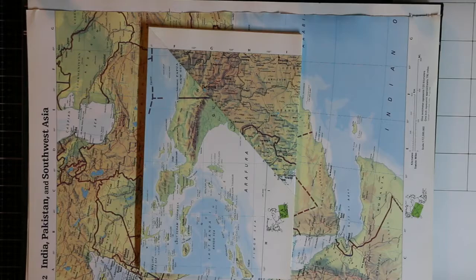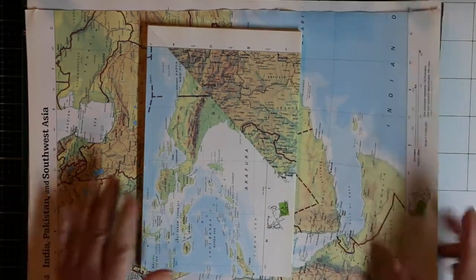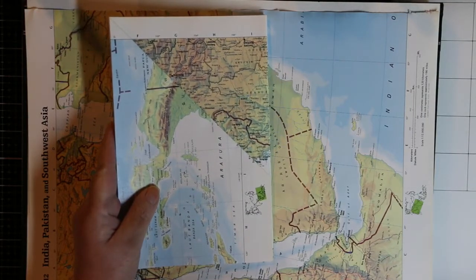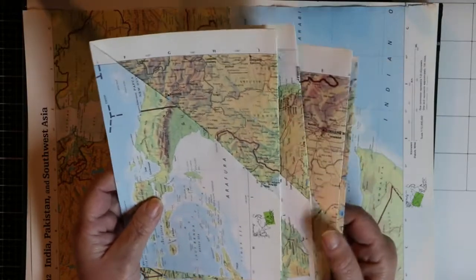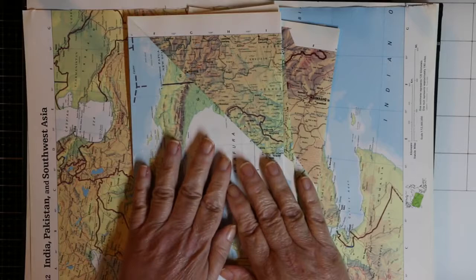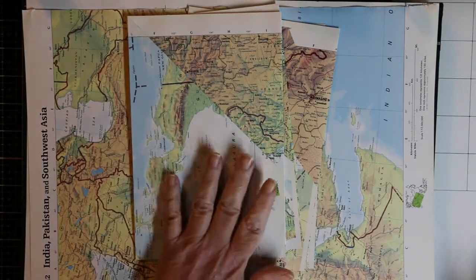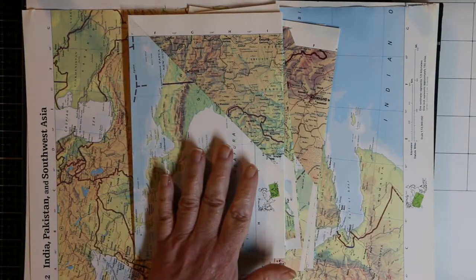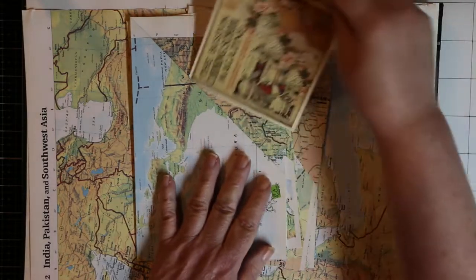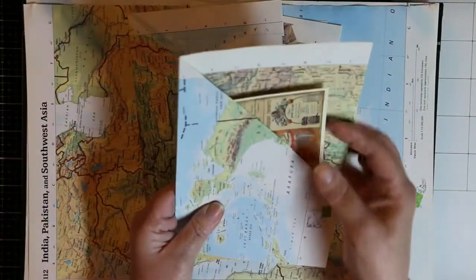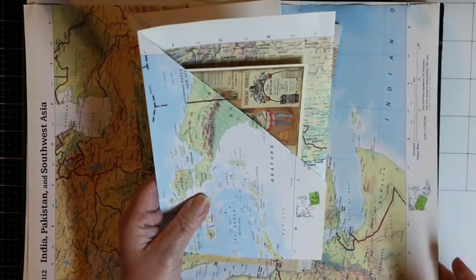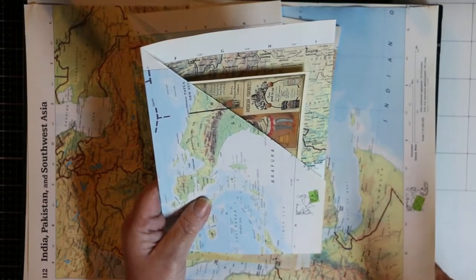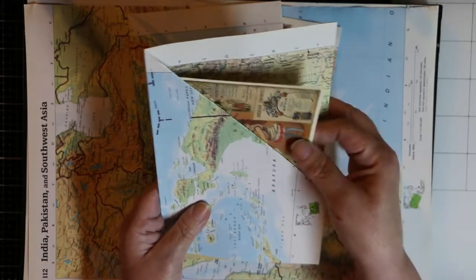So I've been making a recipe junk journal. You may have seen the cover that I made for it already, but now I'm working on doing some of the pages for it. What I decided I needed is I wanted lots of pockets because I want most of the recipes to be on recipe cards or journaling cards of some sort. So I came up with these pockets made out of atlas pages. I got this atlas a long time ago at a thrift store for a few bucks, and so I'm gonna make some pockets.